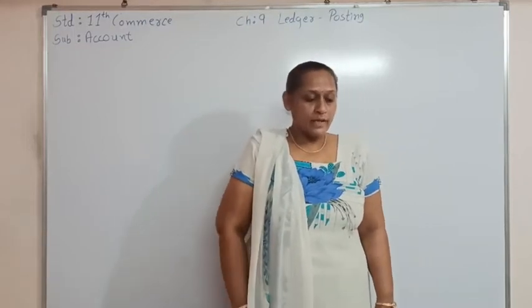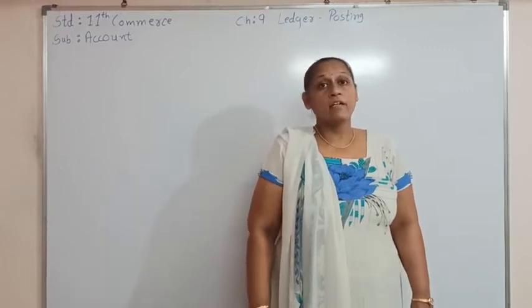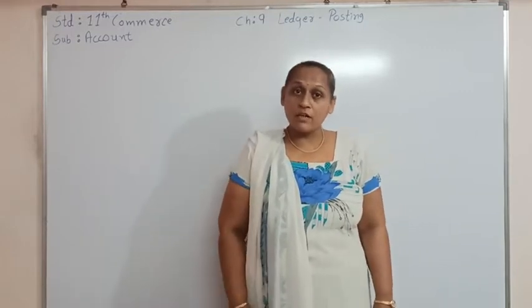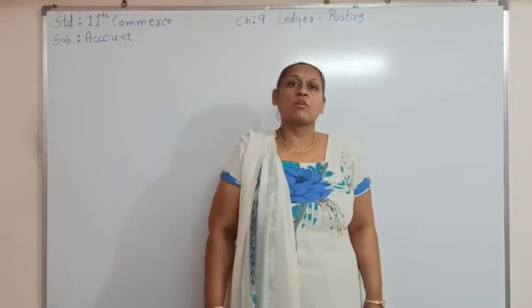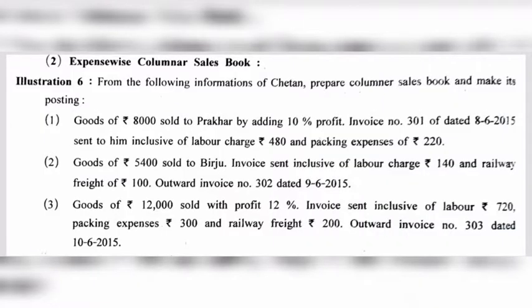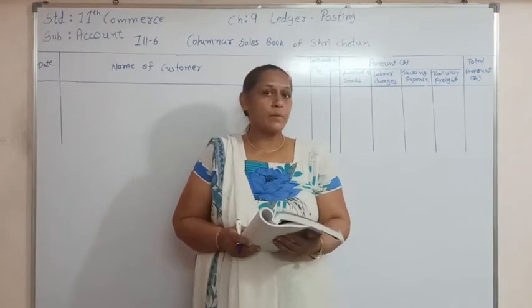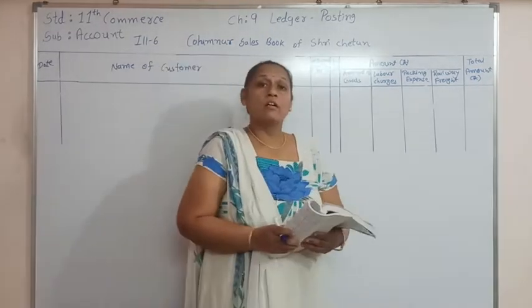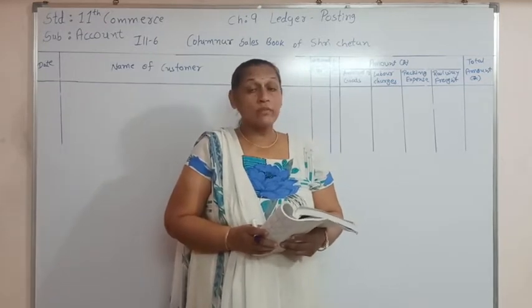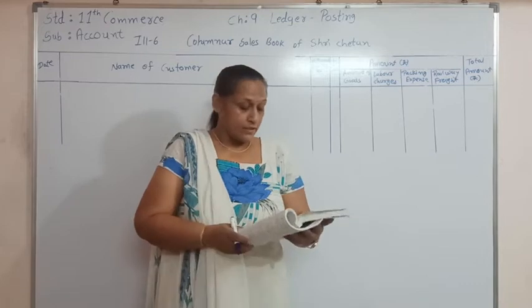And from that we are going to make the posting. Here is sum number 6, where we are going to prepare the subsidiary book first and then we are going to make the posting from the subsidiary book. Here we have to prepare a subsidiary book for different types of expenses and from that we are going to prepare the ledger.